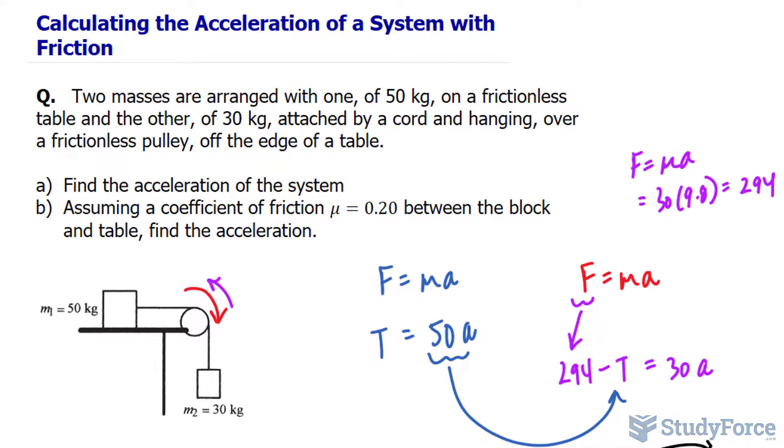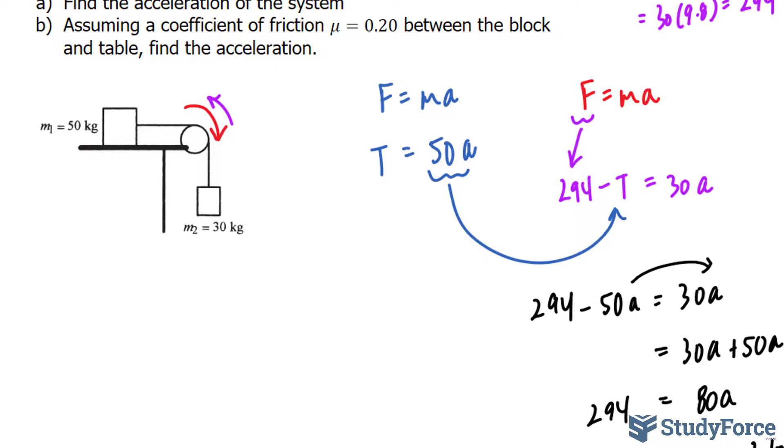Let's move on to B. Assuming that a coefficient of friction, mu equals 0.20 between the block and table, find the acceleration. So how does this change the scenario? Here's how. First of all, tension is not the only force that's being exerted on this mass. Now we have to take into account the fact that there is friction.